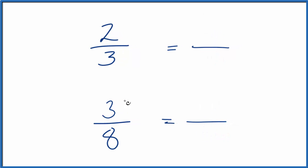I know I could multiply 3 times 8, and that would give me 24. And I could multiply 8 times 3, and that would give me 24. And now I'd have the same denominator.